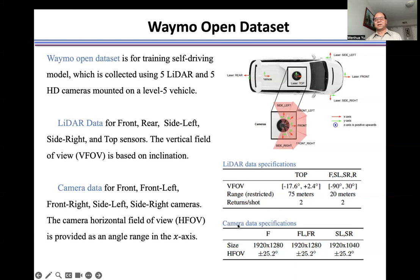The camera data specifications include the image size and the horizontal field of view. These are specified for the front camera, the front-left and front-right cameras, and the side-left and side-right cameras. The image resolution and the speed angle are also provided.